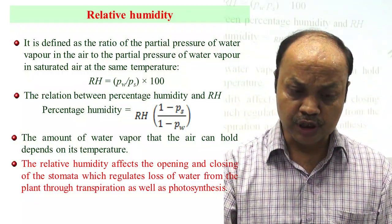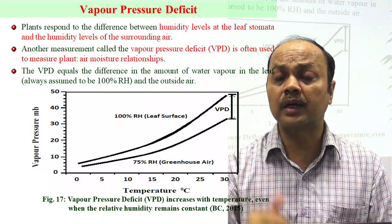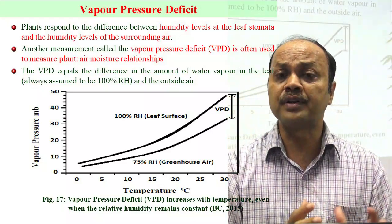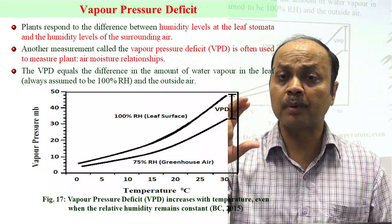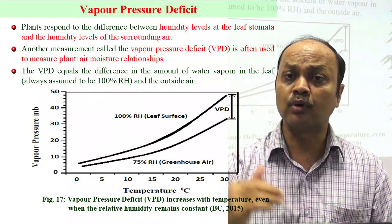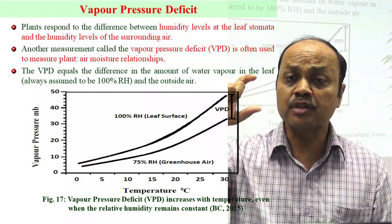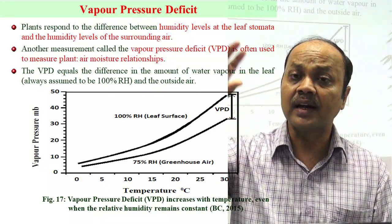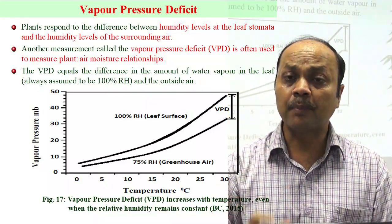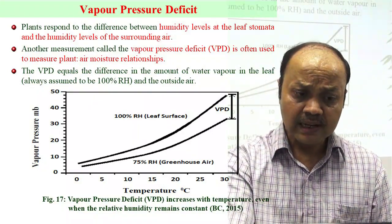Relative humidity is important because inside the greenhouse it creates a vapor pressure difference between the leaf and the surrounding air. Suppose at a particular temperature RH is 50% and a tomato crop is growing — the vapor pressure difference between the leaf and air causes transpiration. This vapor pressure difference plays a very important role in the overall biological activity of the plant.